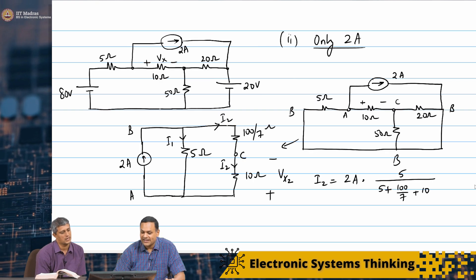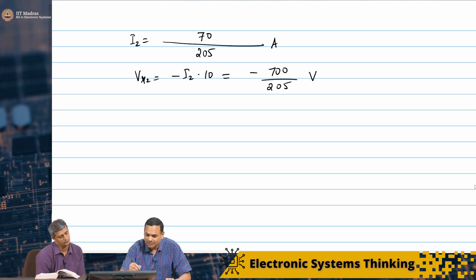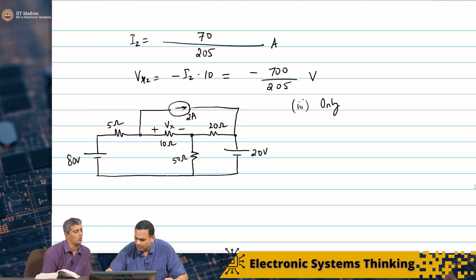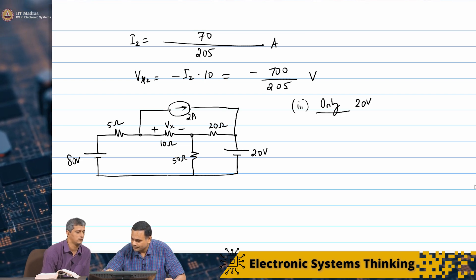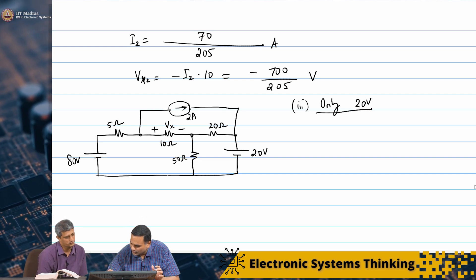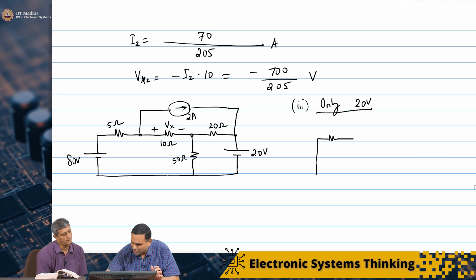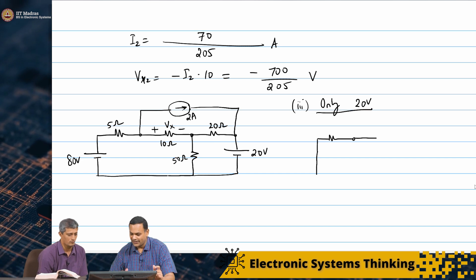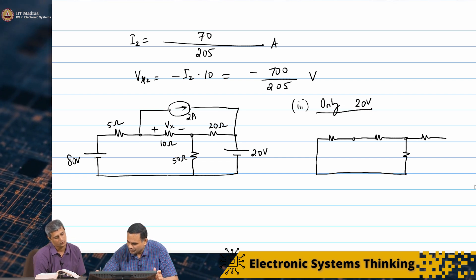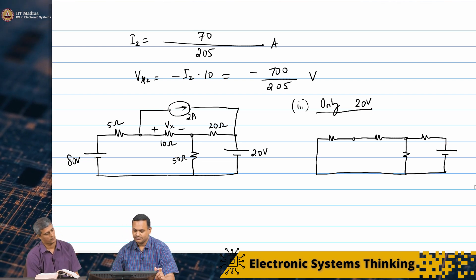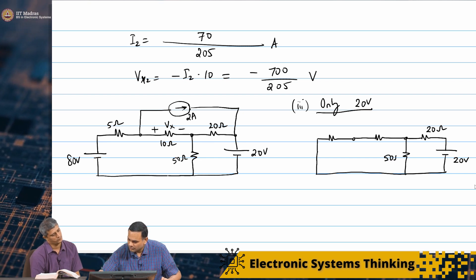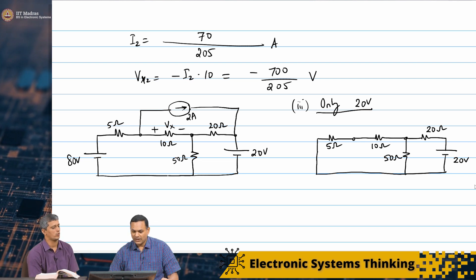Next, let us find VX3 — only the 20 volt source. Short circuit the 80 volts and open circuit the 2 amperes. So I have 20 volts with 20 ohms, 50 ohms, 10 ohms, and 5 ohms. This voltage is VX3.